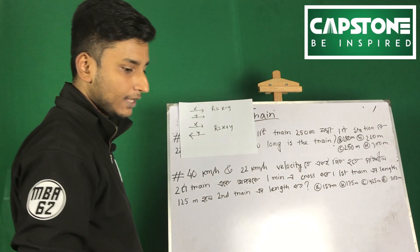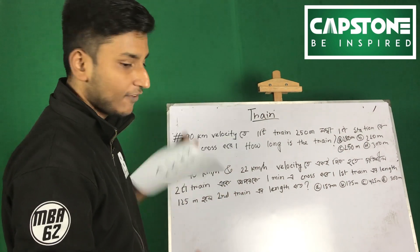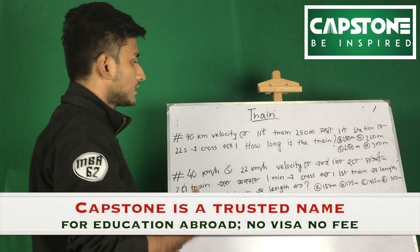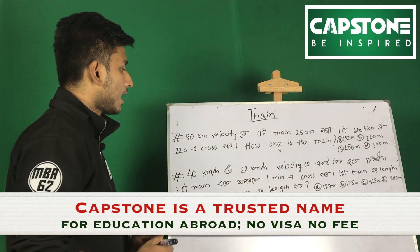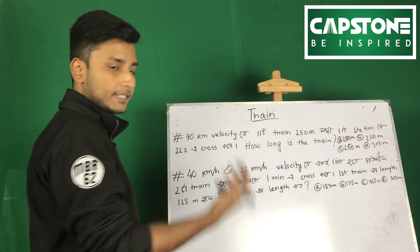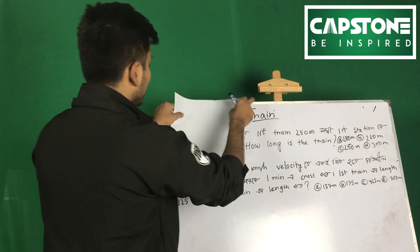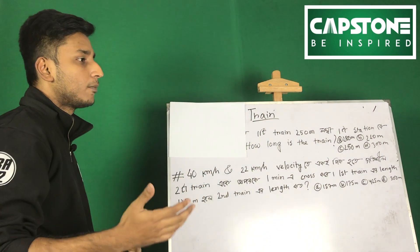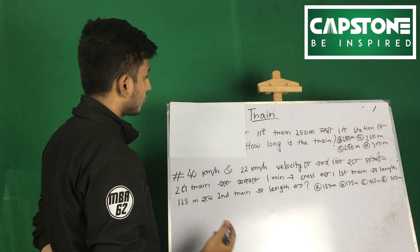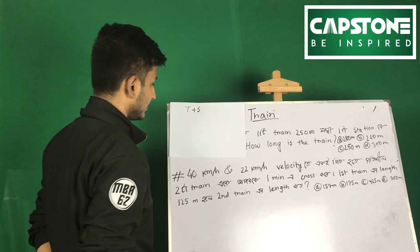We have to cross the train. Let's see the first problem. We have to cross the train: R is equal to 1 station by 2 seconds. R is equal to 1 station by 2 seconds — so how long is the train? This is the topic we have to solve: we have to cross the bus and also cross the station.